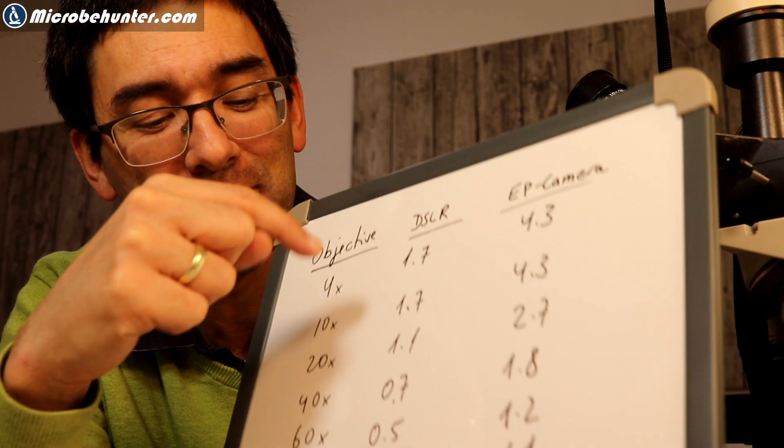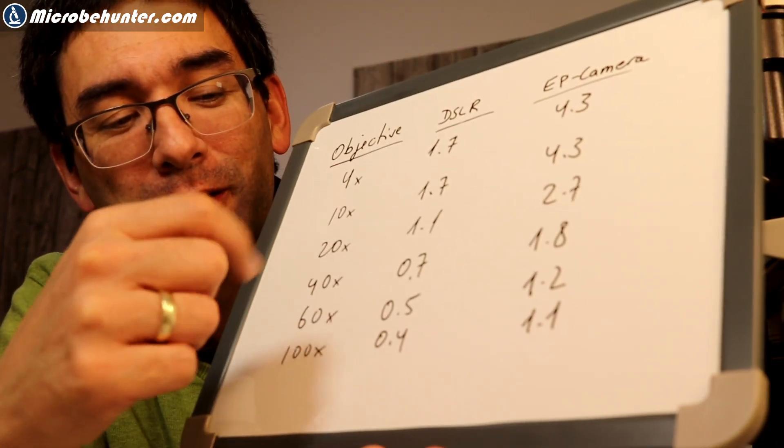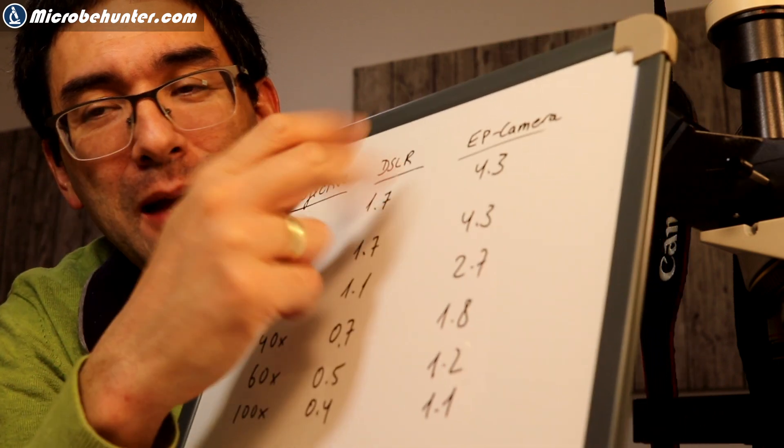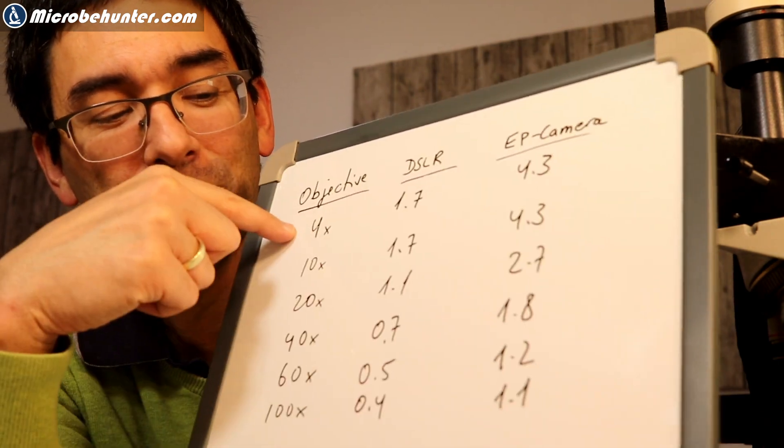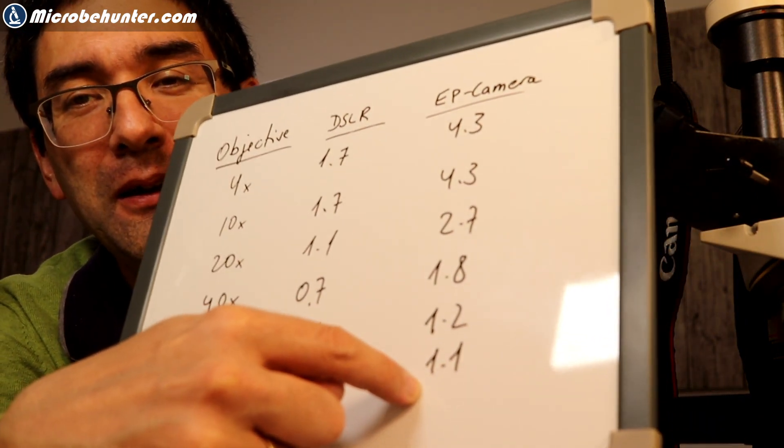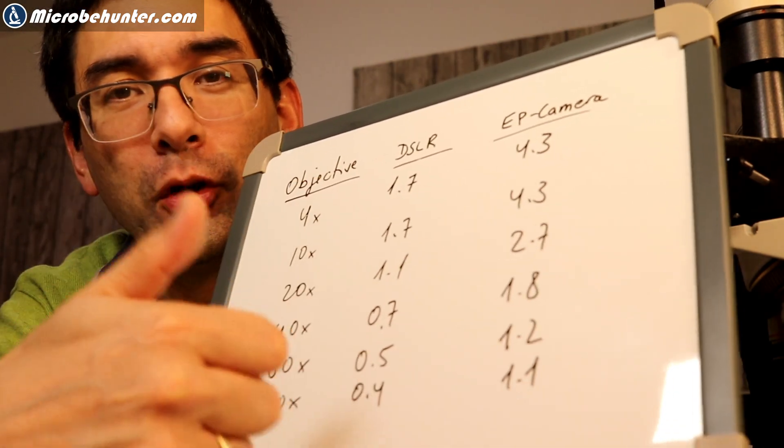And what you can see is, the higher you go up with the magnification, the less megapixels you need. And for the eyepiece camera, it goes from 4.3 megapixels at four times objective, all the way down to 1.1 megapixels. So what does this mean? This means that my DSLR way outperforms what the microscope is able to deliver.